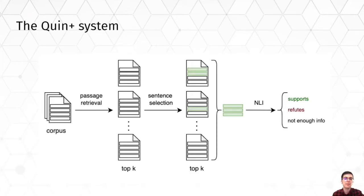QINPlus verifies a given claim in four stages: passage retrieval from a corpus, sentence selection, entailment classification, and the final evidence aggregation stage. In the evidence aggregation stage, we count the number of supporting and refuting evidence from multiple sources. When the number of retrieved evidence passages that entail or contradict the claim is low, we label the claim as inconclusive.